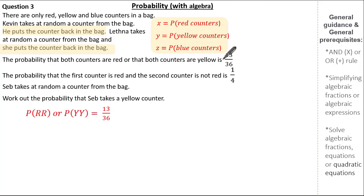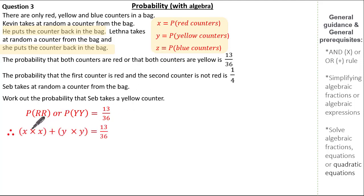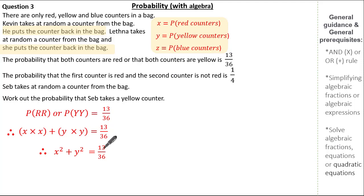From the first condition, the probability of red AND red OR yellow AND yellow equals 13 over 36. Substituting our expressions: x times x represents red AND red, OR y times y represents yellow AND yellow, all equalling 13 over 36. Simplifying gives x squared plus y squared equals 13 over 36. I can't solve anything from this alone, but I now have one equation.